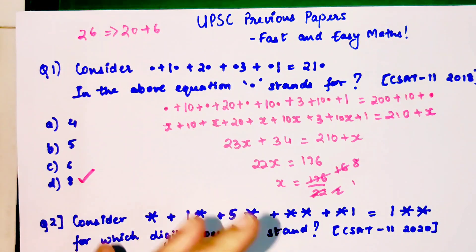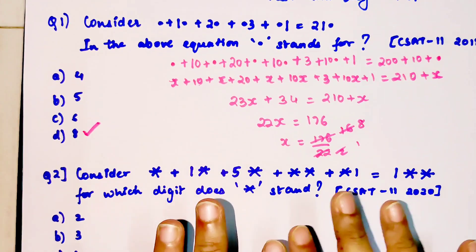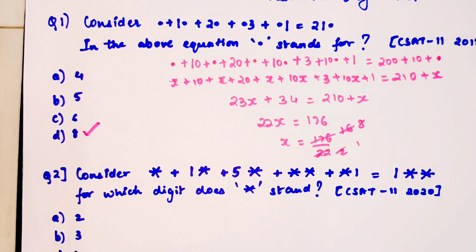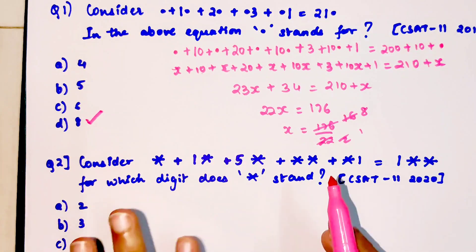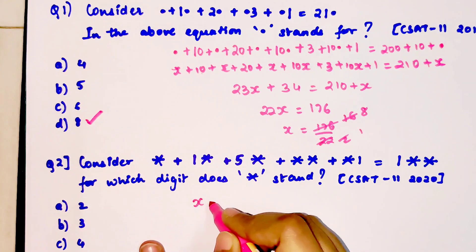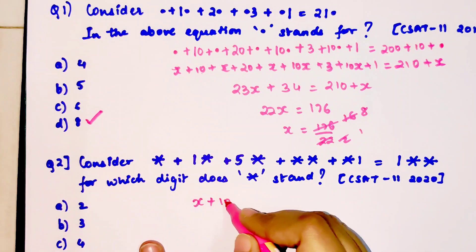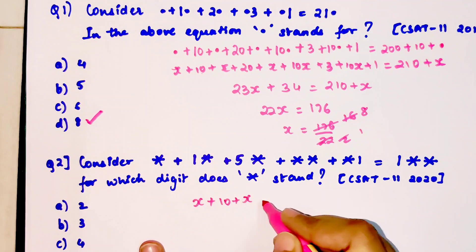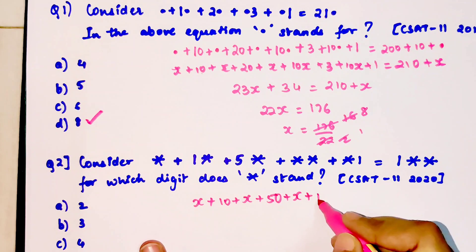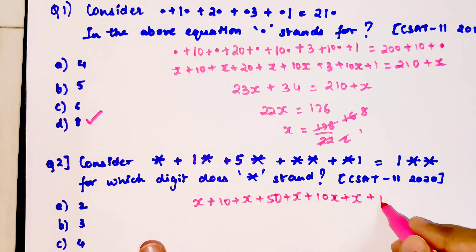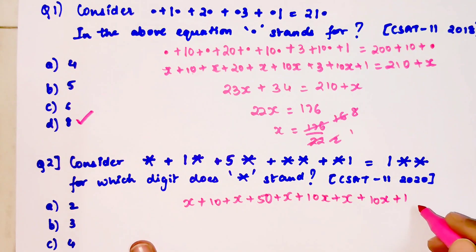Now let's use the same logic for this problem. Instead of writing the symbol, let's write it as x. So we have 1x + 10 + x + 50 + x + 10x + x + 10x + 1 = 100 + 10x + x.